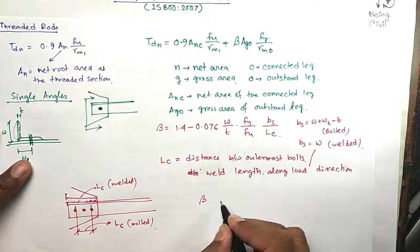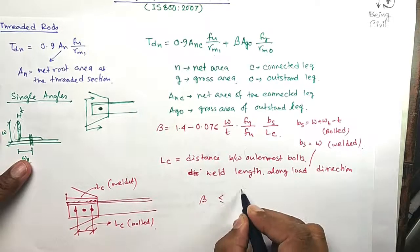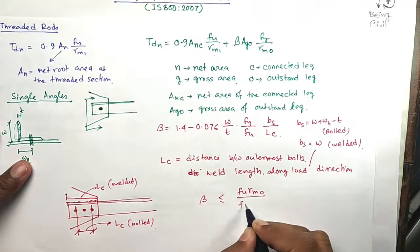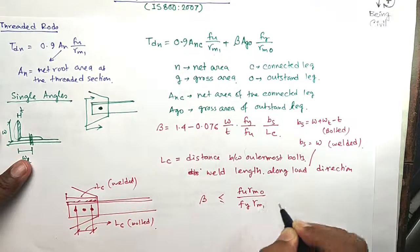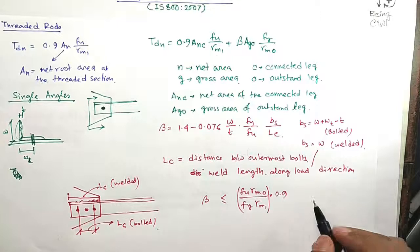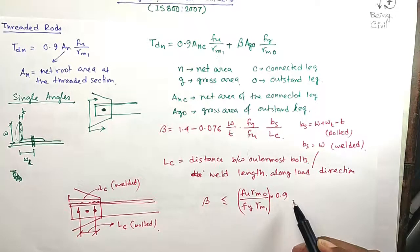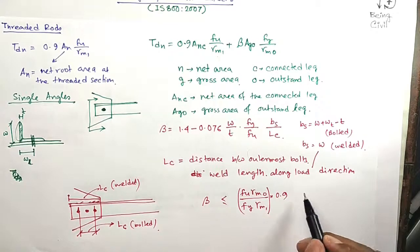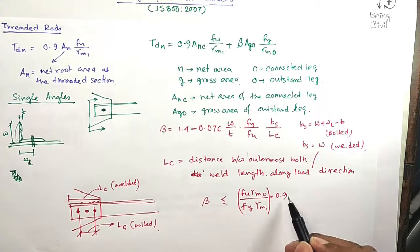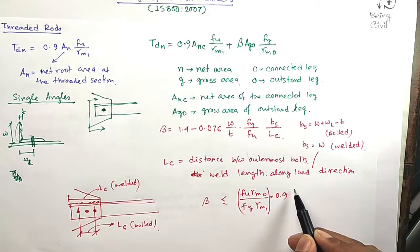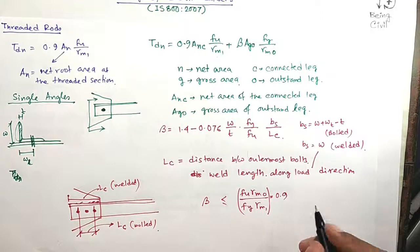This beta value should be less than or equal to (FU×γM0) / (FY×γM1) × 0.9. Kindly note that this 0.9 value is not in the code. In amendments of 2012, the code has included this 0.9. So make the correction in your code IS-800.